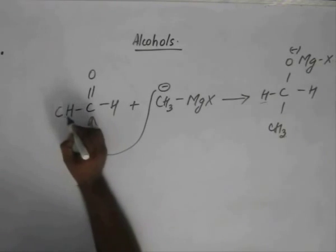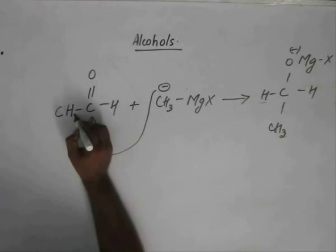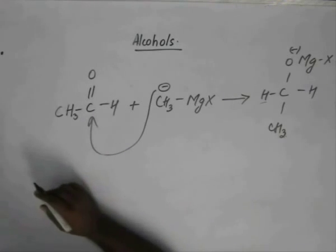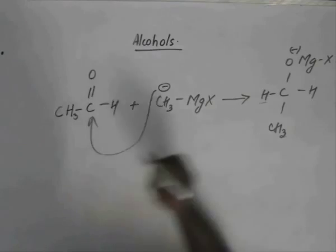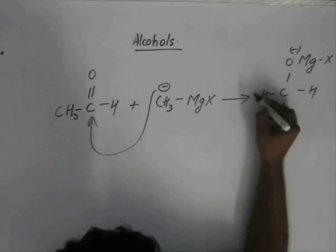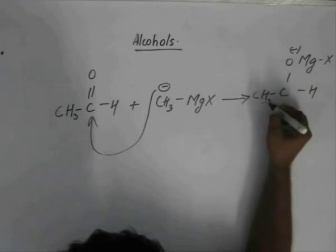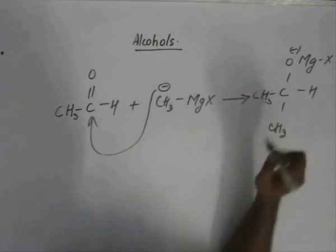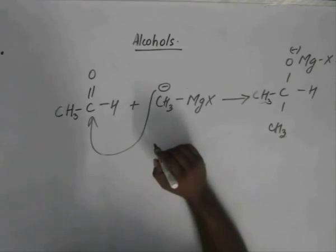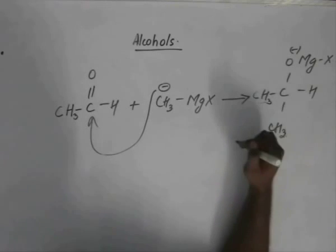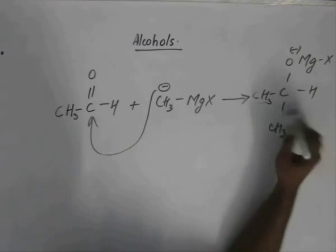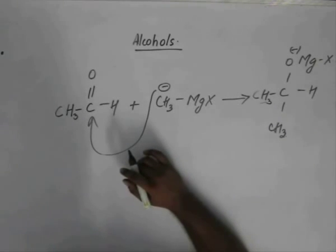If we change the substrate from formaldehyde to acetaldehyde, this time we will get 2-propanol as our product when we hydrolyze the compound.